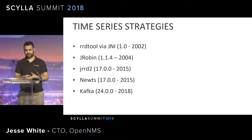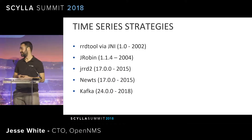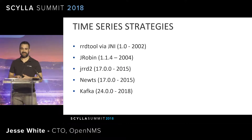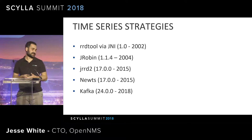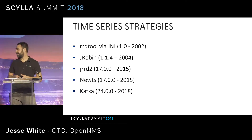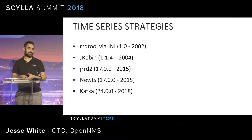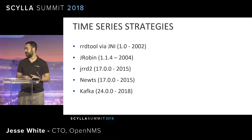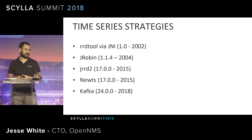In 2004 we actually started using a pure Java-based implementation of RRDTool called JRobin to make distribution a little easier, not having to depend on any system libraries. There's a big gap between 2004 and 2015 — that was actually the only time series strategy for a very long time. In 2015 we developed JRD2, which is basically a multi-threaded version of the RRDTool interface, and that same year we also added support for Newts.